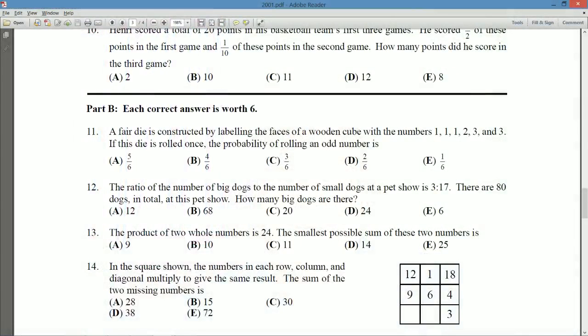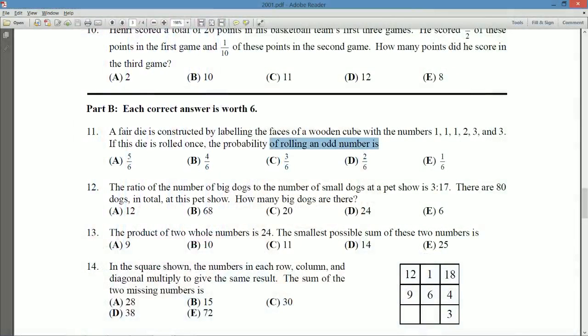So question 11: a fair die is constructed by labeling the faces of a wooden cube with the numbers 1, 1, 1, 2, 3, and 3. If the die is rolled once, the probability of rolling an odd number is.